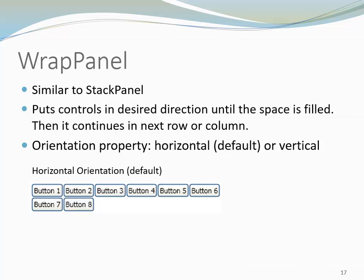Wrap Panels are similar to Stack Panels. They place controls in the desired direction until the space is filled, then continue in the next row or column. In the case of the Wrap Panel, the default orientation is horizontal, meaning one control is placed next to the prior one. This is similar to the way we write one word next to the other until we need to move on to the next line.